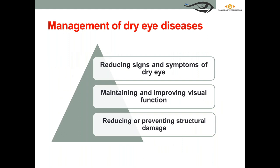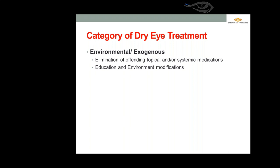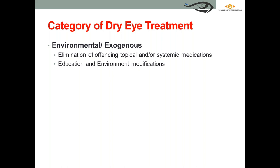Management of dry eye aims to reduce signs and symptoms, maintain and improve visual function, and reduce or prevent structural damage to the ocular surface from tear film instability and hyperosmolarity. A primary step is identifying and eliminating triggering factors, including topical and systemic medications that may be contributing to dryness.